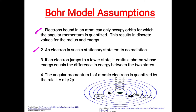The second assumption is: an electron in a stationary state emits no radiation — when the electron is in a stationary state, it does not lose energy. The third assumption is: if an electron jumps to a lower state, it emits a photon whose energy equals the difference in energy between the two states. When an electron moves from a higher energy level to a lower one, it emits energy.